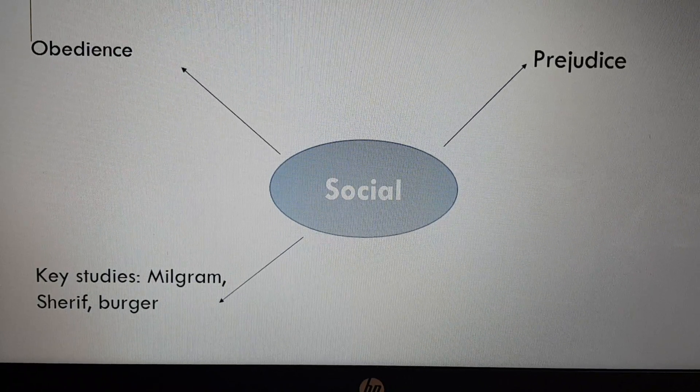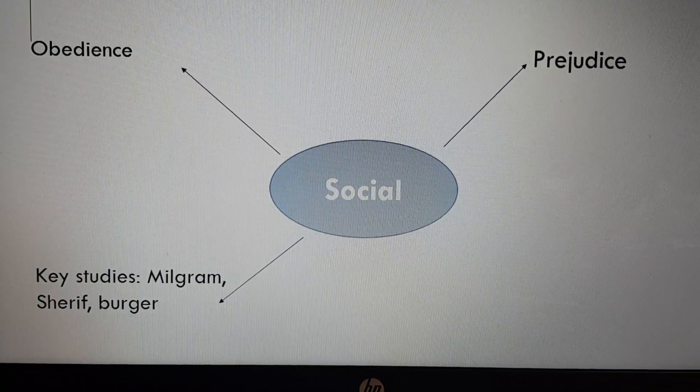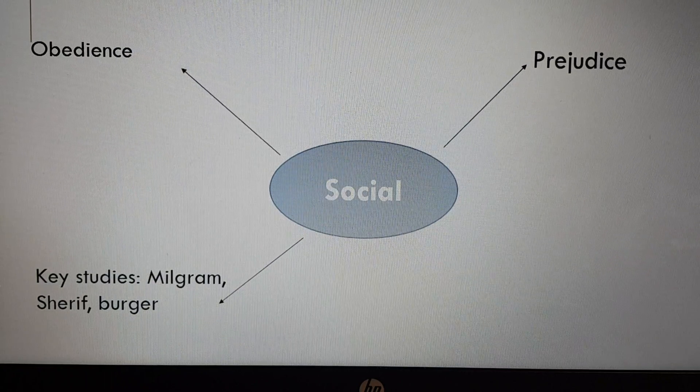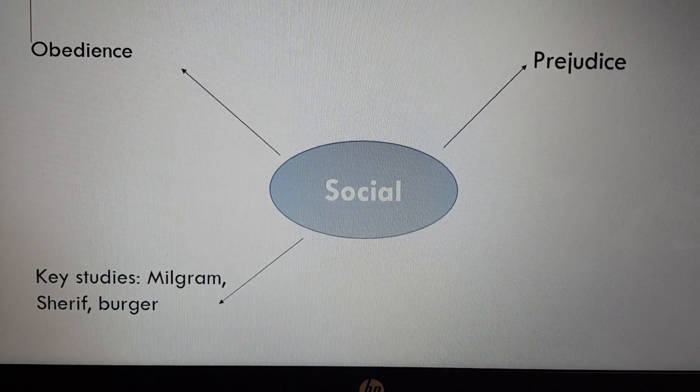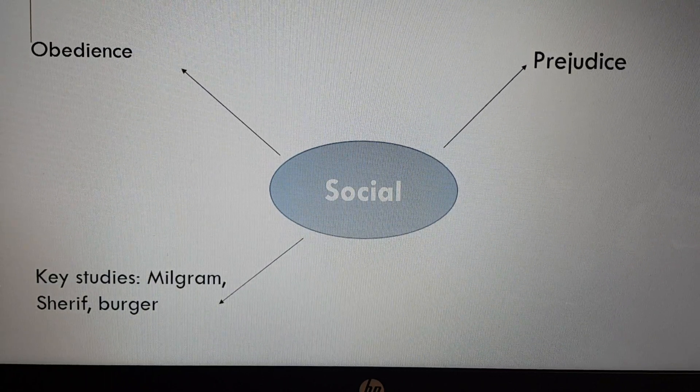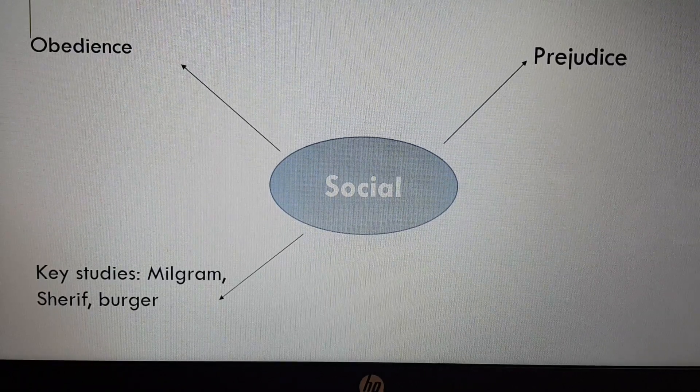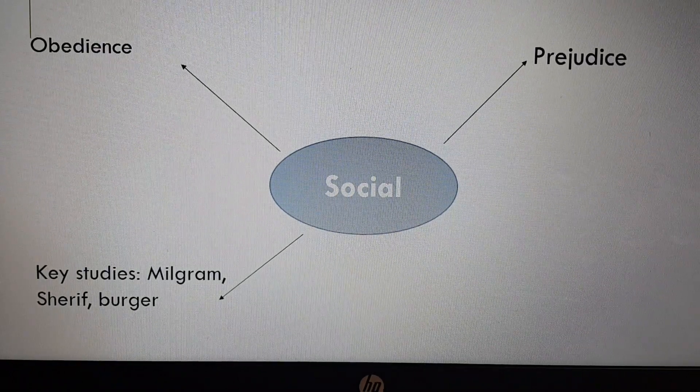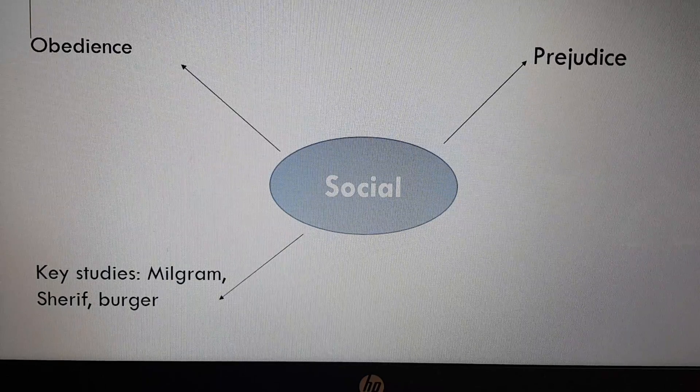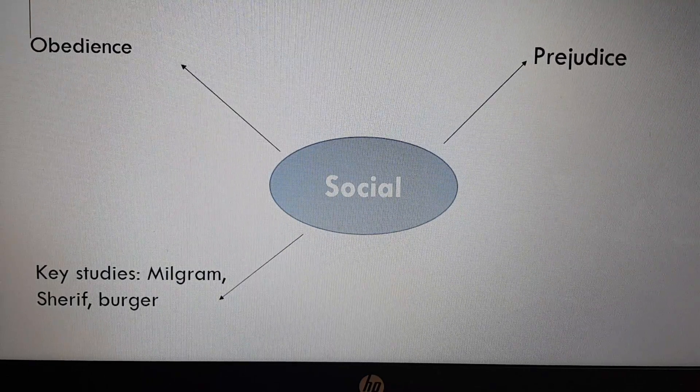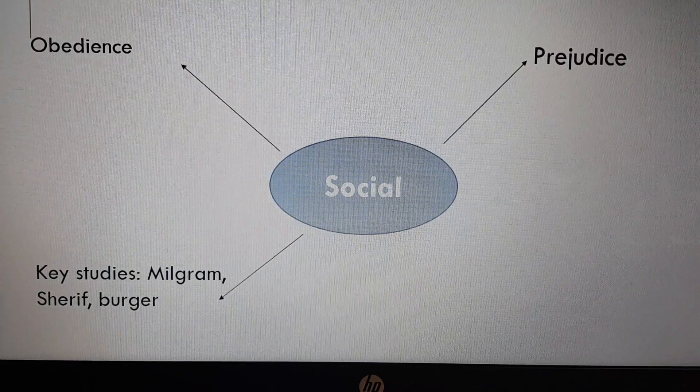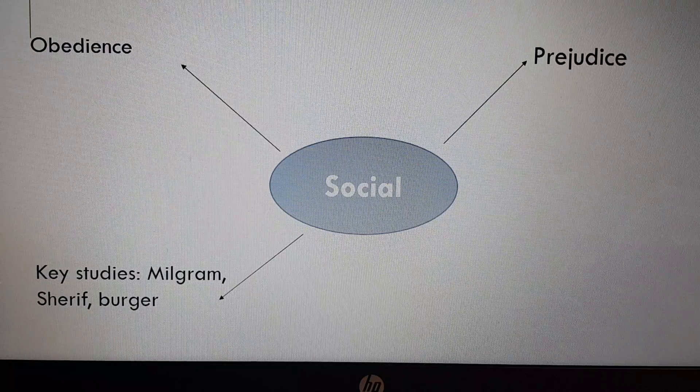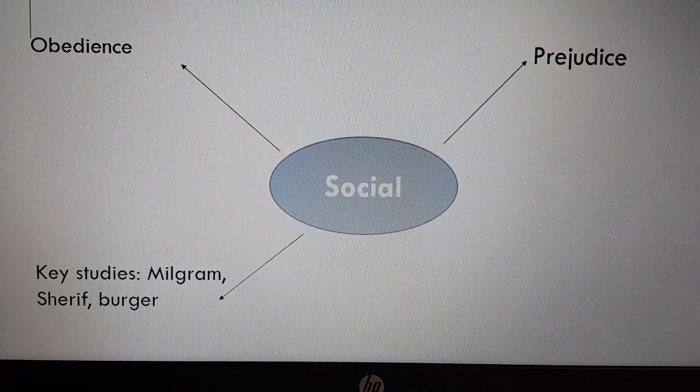Okay, now what's wrong with this mind map? It's too simplistic and it's not effective. It consists of keywords, we've got the social approach in the middle, and it does cover topic areas such as obedience and prejudice, but this mind map is very basic. It is not going to help you with your revision.